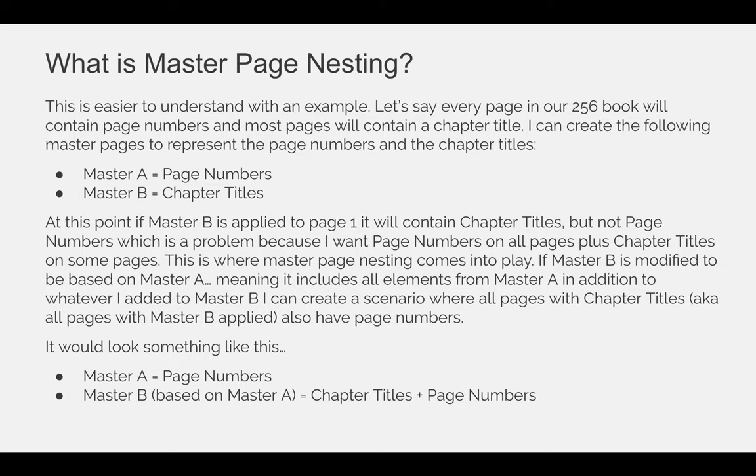This is where master page nesting comes into play. If Master B is modified to be based on Master A — meaning it includes all elements from Master A in addition to whatever I added to Master B — I can create a scenario where all pages with chapter titles, meaning all pages with Master B applied, also have page numbers. It would look something like this: Master A would just be page numbers and nothing else. But for Master B, I am going to apply Master A to Master B so that the page numbers now repeat on Master B, and then add my chapter titles to the Master B master page.